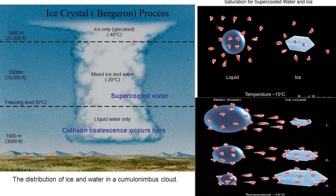Why are there so few ice crystals in the middle of the cloud even when the temperature is well below freezing? Laboratory studies reveal that the smaller the amount of pure water, the lower the temperature at which water freezes. Given that cloud droplets are extremely small, it takes very, very low temperatures to turn them into ice. So we learn that as a water droplet becomes bigger, it becomes ice crystal more quickly.